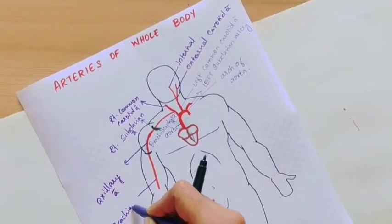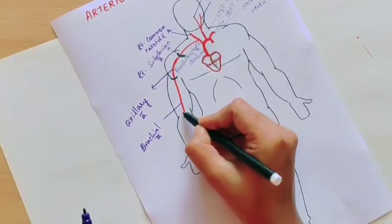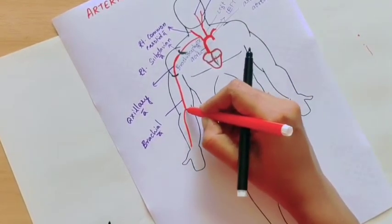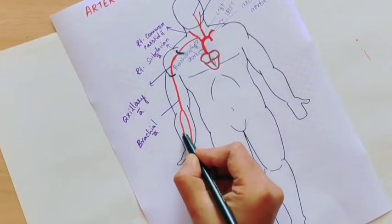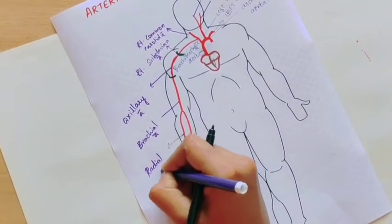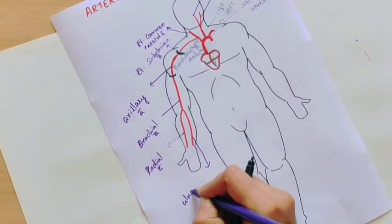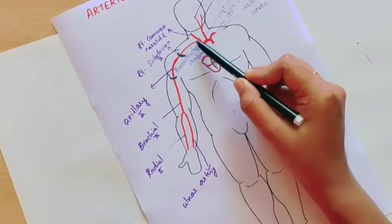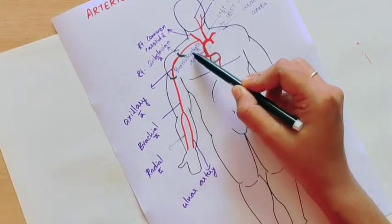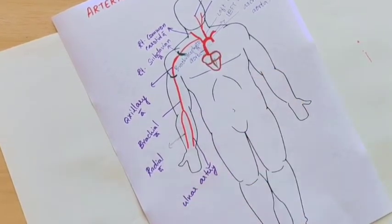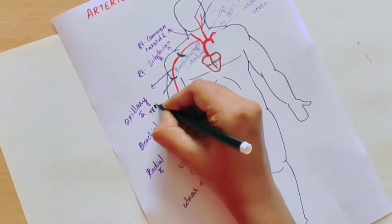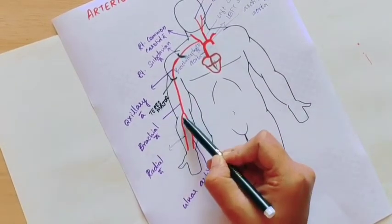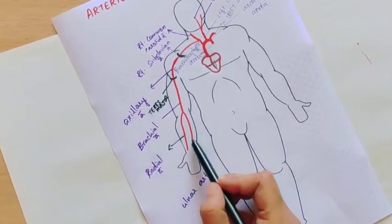Once the teres major muscle is crossed, it is called the brachial artery — the brachial artery is in the arm. The brachial artery reaches the cubital fossa. At the cubital fossa, it divides into two branches: the radial artery and the ulnar artery. So this is all about the subclavian artery — the subclavian goes, crosses the first rib and becomes the axillary artery, which crosses the teres major muscle and becomes the brachial artery, which then divides into radial and ulnar arteries.